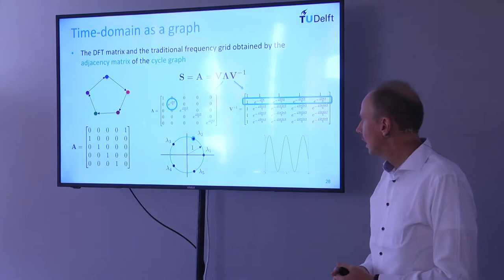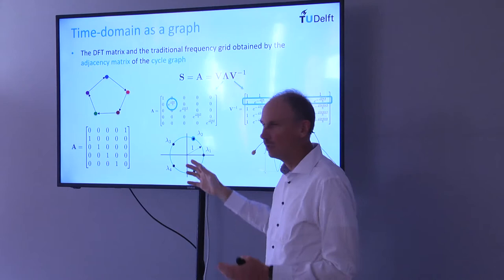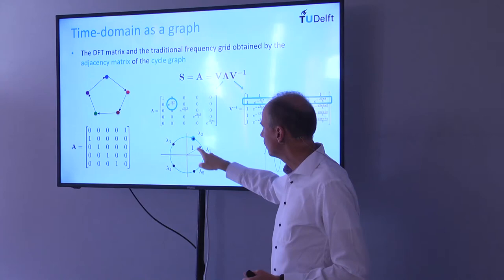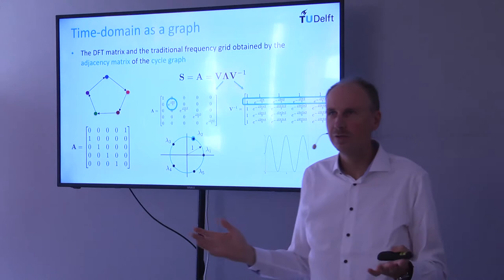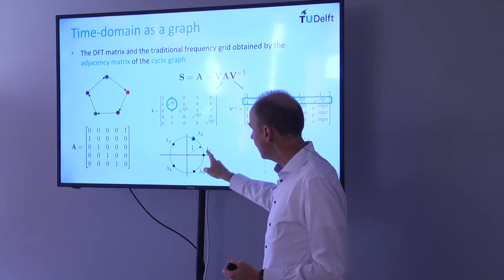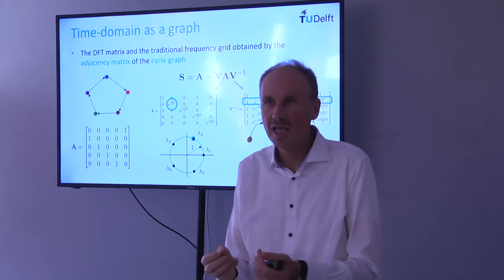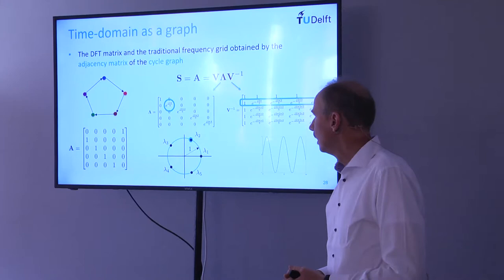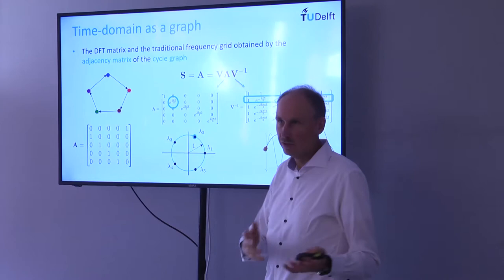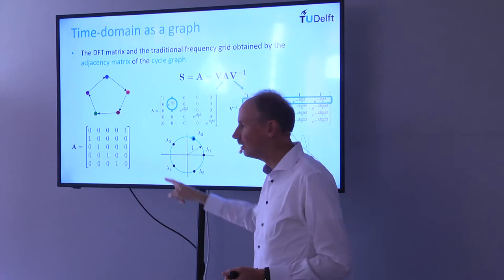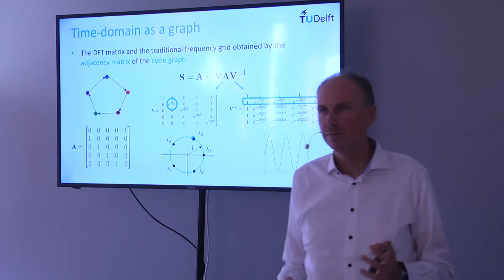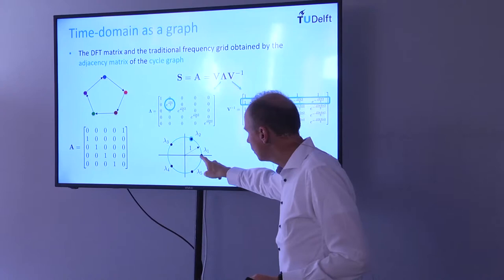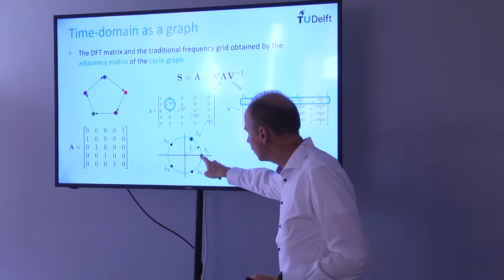In this directed cycle graph, λ_2 and λ_5 are equidistant from λ_1 (the point |λ_max|), meaning they have the same total variation — corresponding to positive and negative frequencies in classical signal processing. Any circulant graph — directed or undirected, adjacency or Laplacian — leads to a circulant shift operator diagonalizable by the DFT matrix, though the eigenvalues (graph frequencies) will differ.